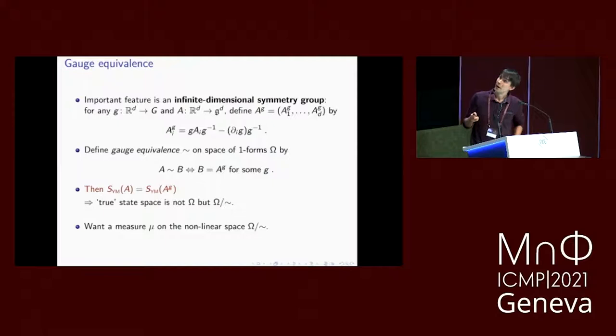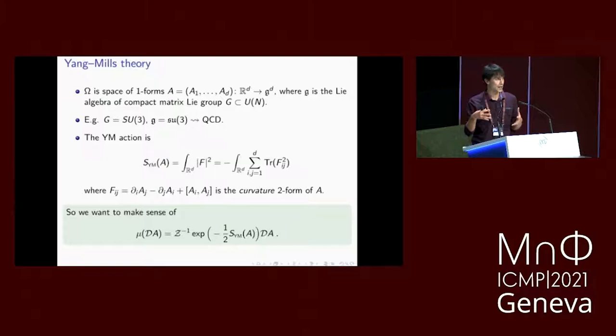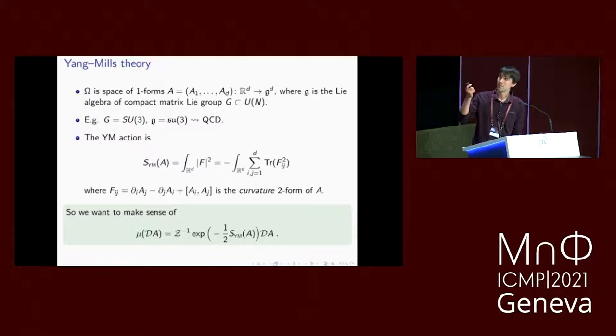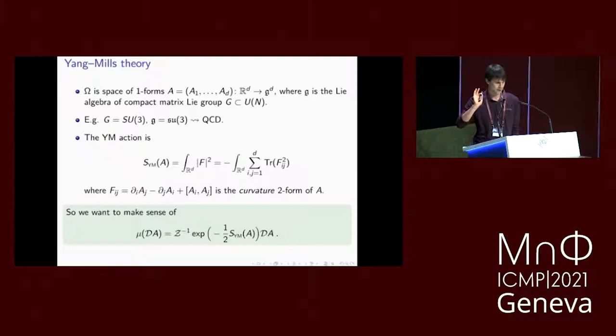I'm going to narrow it down and speak about gauge theories, specifically Yang-Mills theories. We needed two ingredients: the state space here is the collection of one-forms defined on R^d that take values in the Lie algebra, which I take to be that of a compact matrix Lie group G. If you want to fix one Lie group, think of G as SU(3), whose Lie algebra is the 3x3 complex matrices that are traceless and skew-Hermitian. This corresponds to the physical theory of quantum chromodynamics in four dimensions.